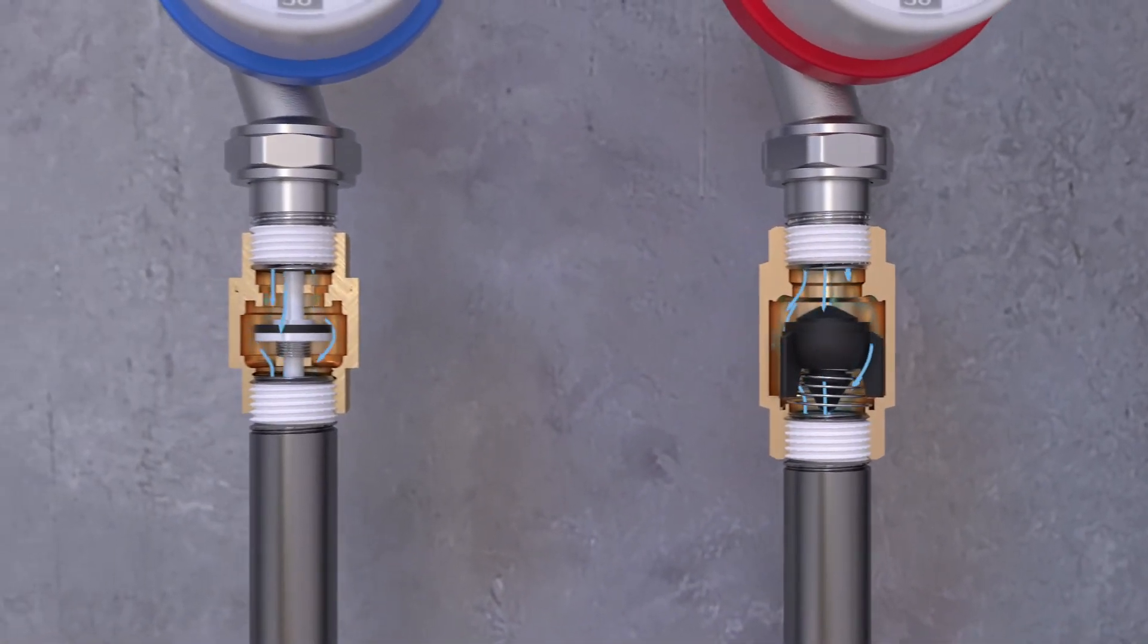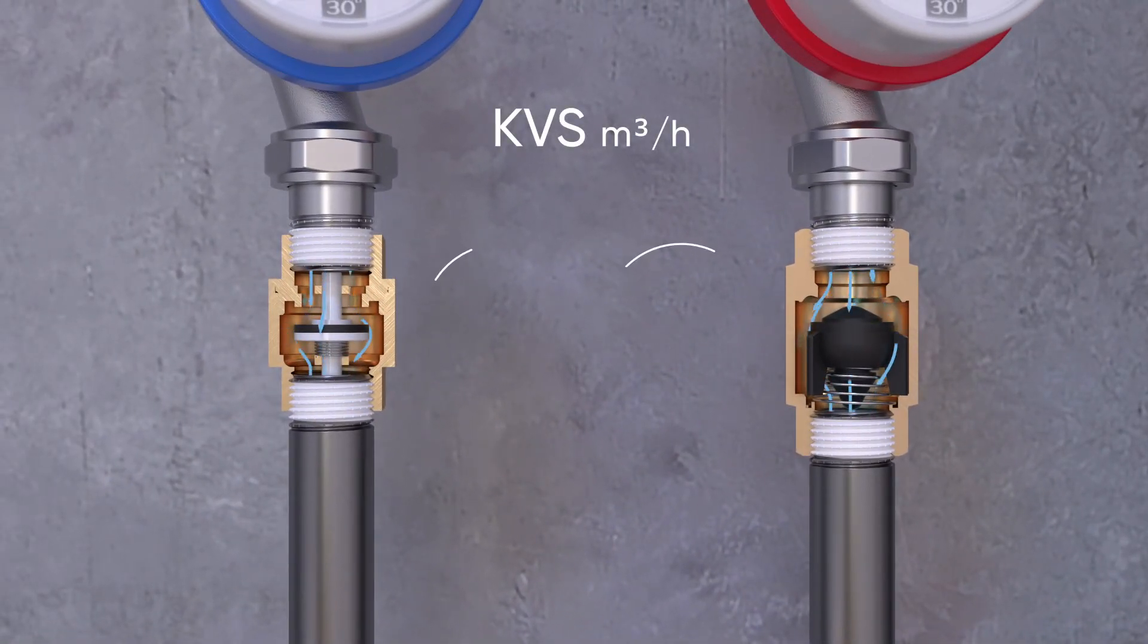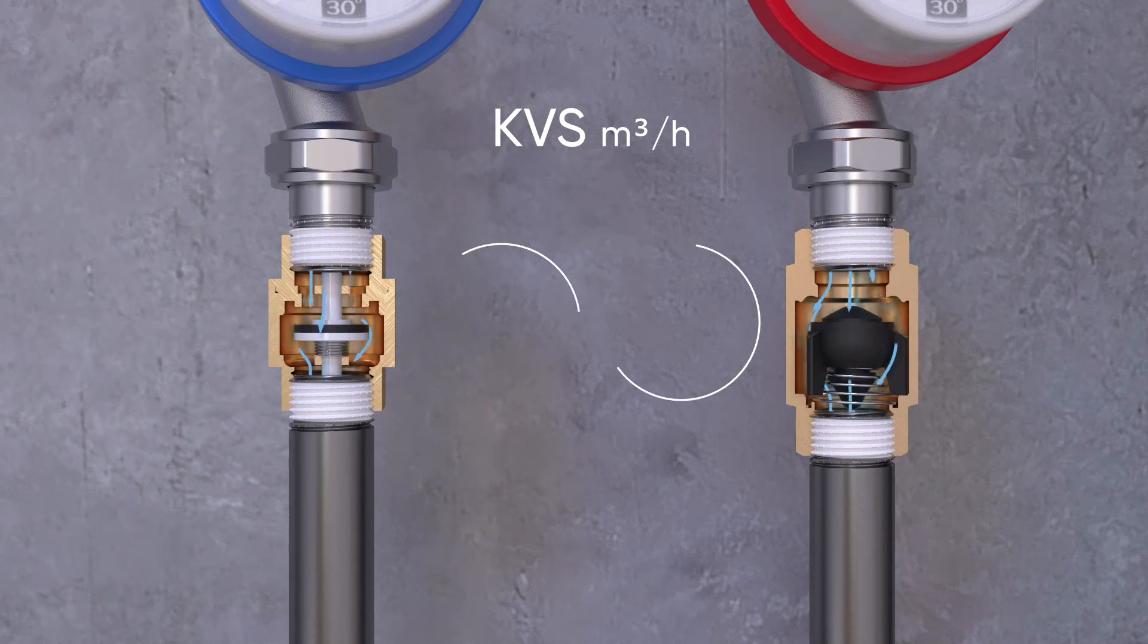The results of independent laboratory testing have proven that the flow rate of Miraya Rebus check valve surpasses the flow rate of traditional counterparts by two times.